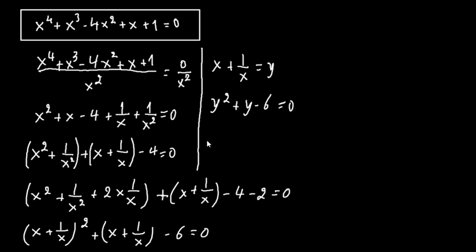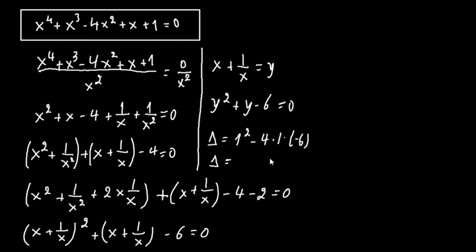This is a quadratic. We find the discriminant: D equals 1 squared minus 4 times 1 times negative 6. We have 1 here, and 4 times negative 6 is negative 24, multiplied by negative gives plus 24, so D equals 1 plus 24, which is 25. This is greater than 0.